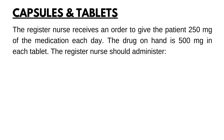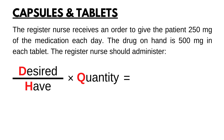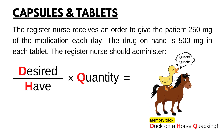The restaurant nurse receives an order to give the patient 250 mg of the medication each day. The drug on hand is 500 mg in each tablet. In this problem, we use the method desire over half times quantity. Desire is the dose that the provider ordered to the patient. Have is what you have on hand. And quantity — it can be capsules, tablets, or milliliters. There is a memory trick to remember this formula: just imagine a duck on a horse quacking. Now, let's answer it.